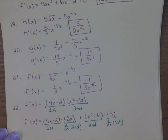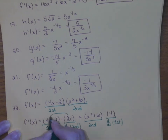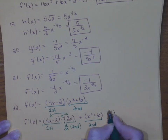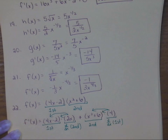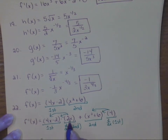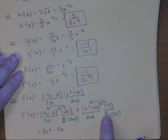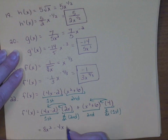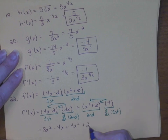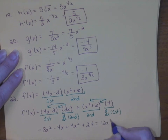Always try to clean up these problems — to get full credit you'll need to make sure you clean these up. Using distributive property, 2x times 4x is 8x squared, 2x times minus 4 is minus 4x. Then 4 times x squared is 4x squared and 4 times 6 is 24. So we get 12x squared minus 4x plus 24.